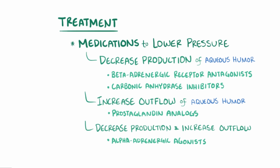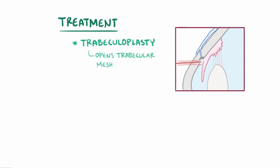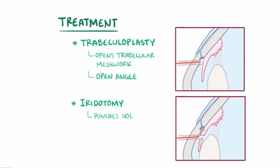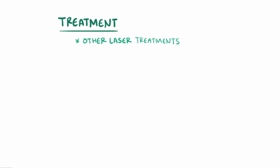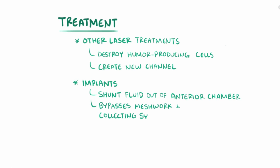In addition to medications, there are also laser treatments available. For example, trabeculoplasty is a treatment where a laser is used to open the trabecular meshwork, and this helps treat open-angle glaucoma. There's also iridotomy, which uses a laser to punch a tiny hole in the iris, which helps to treat closed-angle glaucoma. There are also other laser treatments, such as ones that destroy the humor-producing cells, reducing the production of fluid. In serious cases, lasers can be used to create a new channel through which the aqueous humor can be drained out. Finally, there are implants that shunt fluid out of the anterior chamber by bypassing the trabecular meshwork and collecting system.